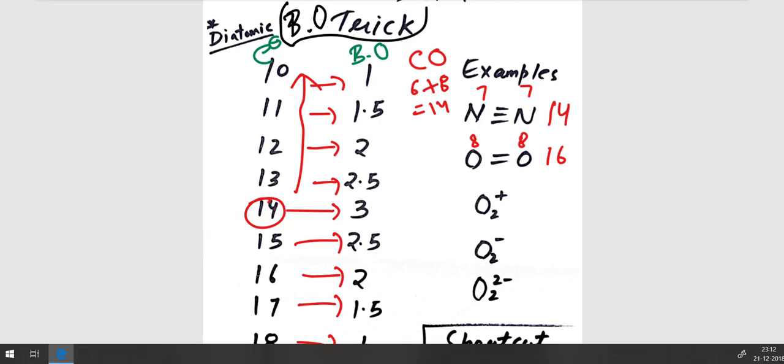For example, let's consider this example: O2+. Since it has a plus sign, we will remove one electron. So the total number of electrons will be 15. So for 15, we can clearly see that the bond order will be 2.5.